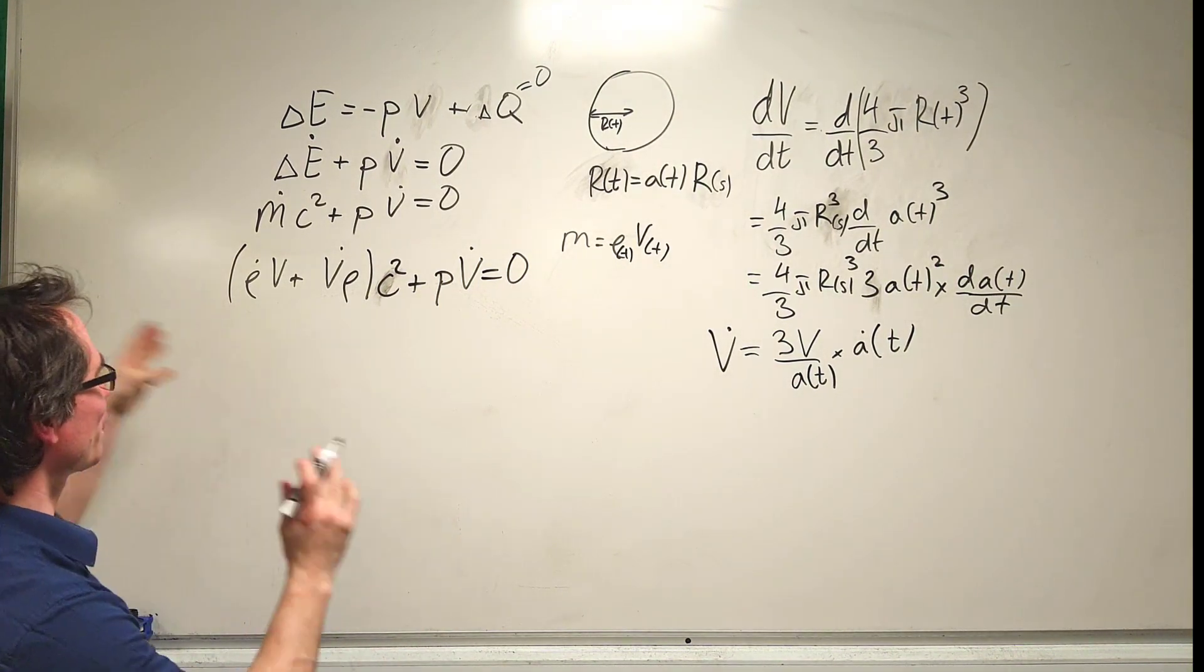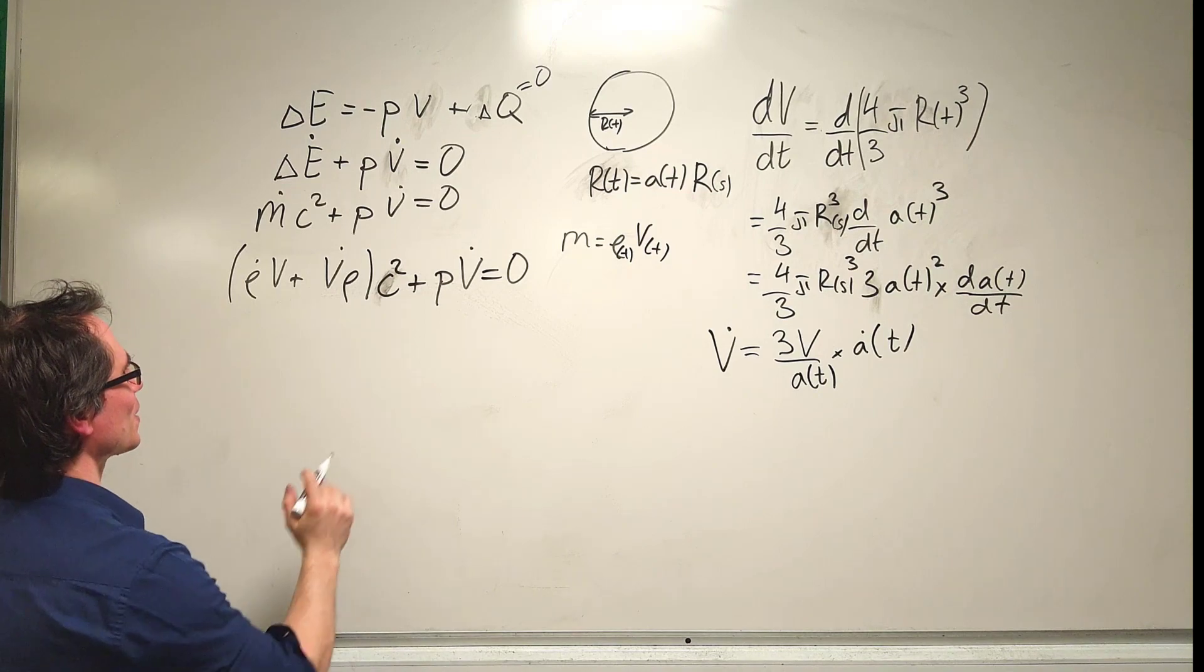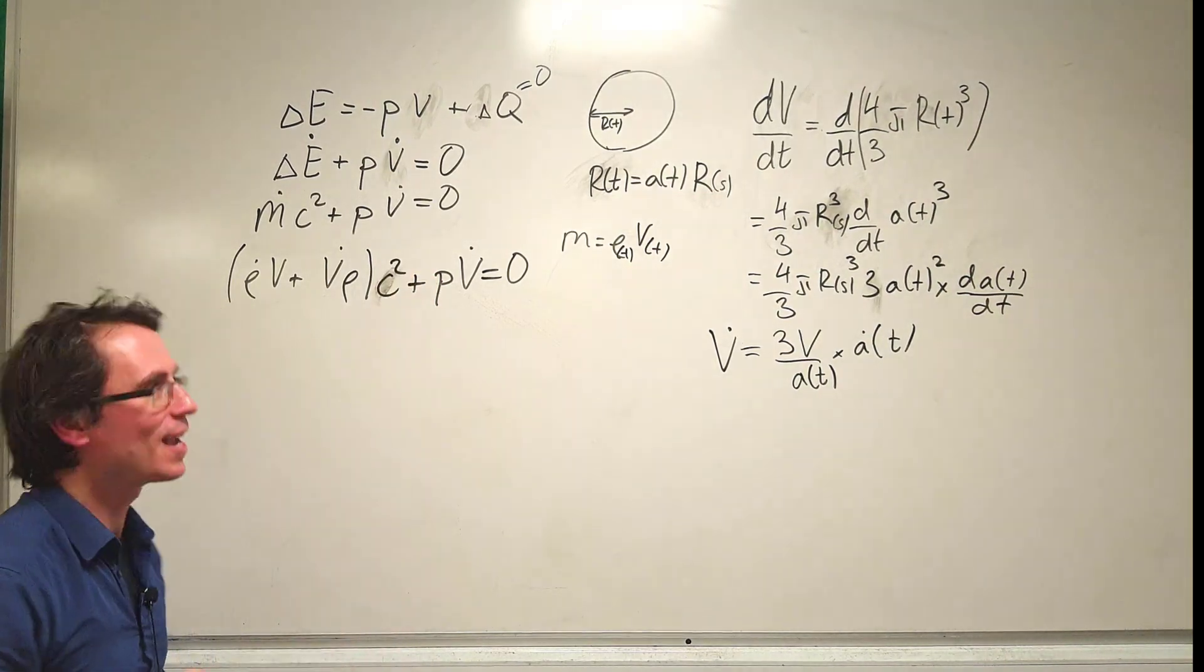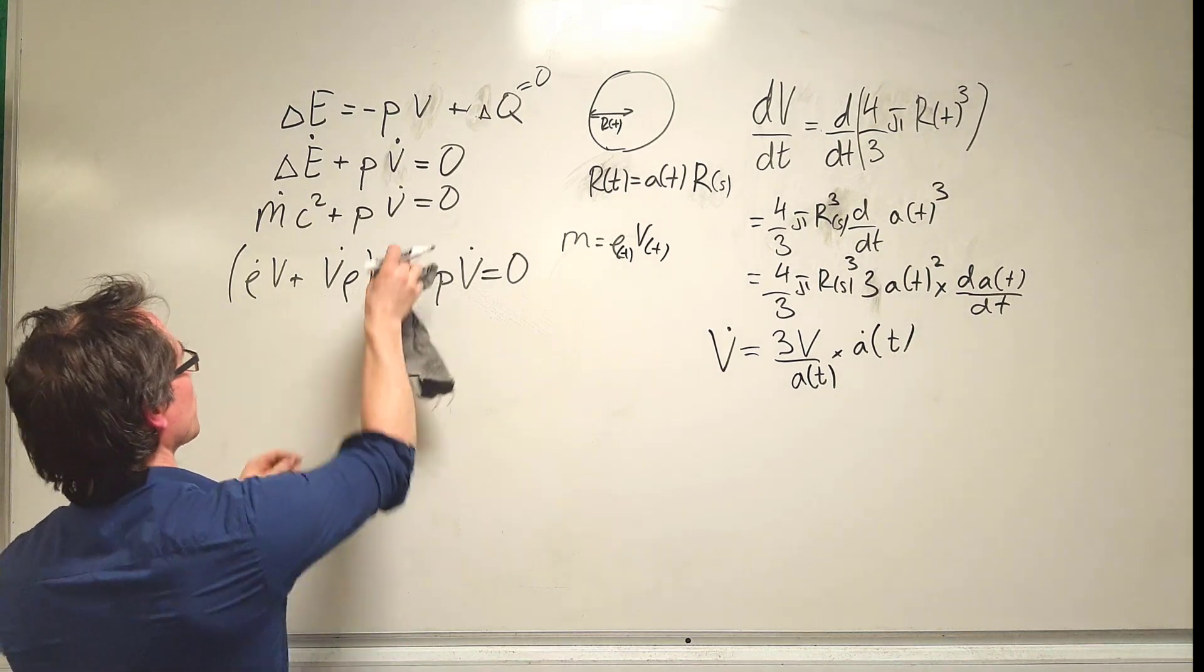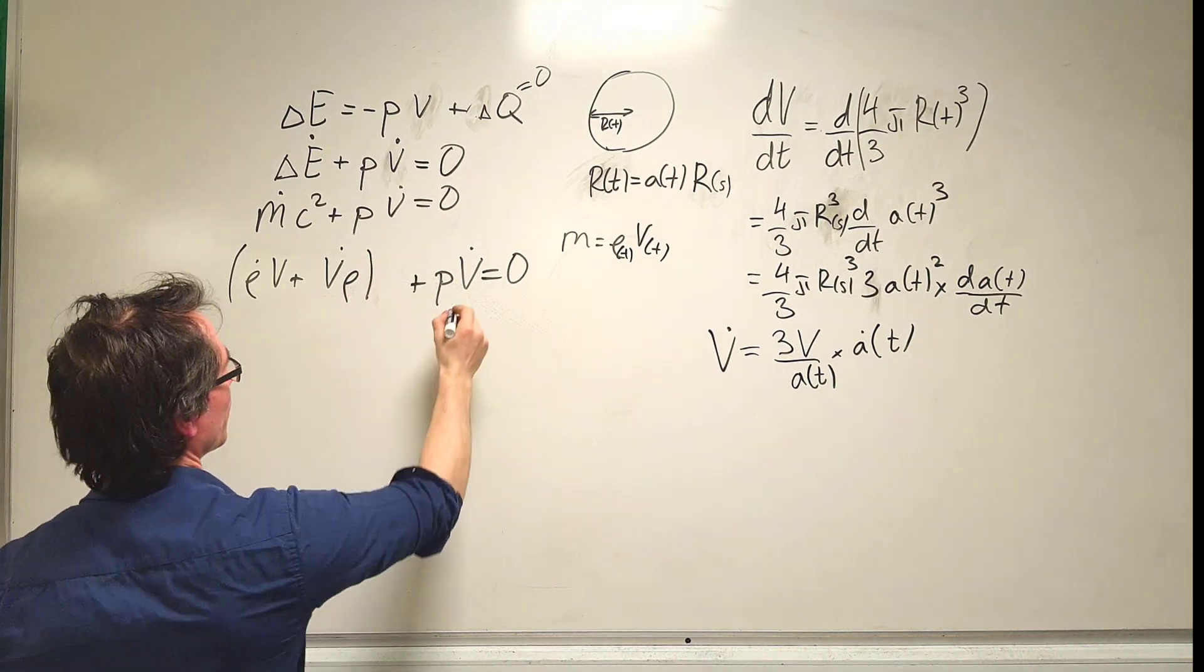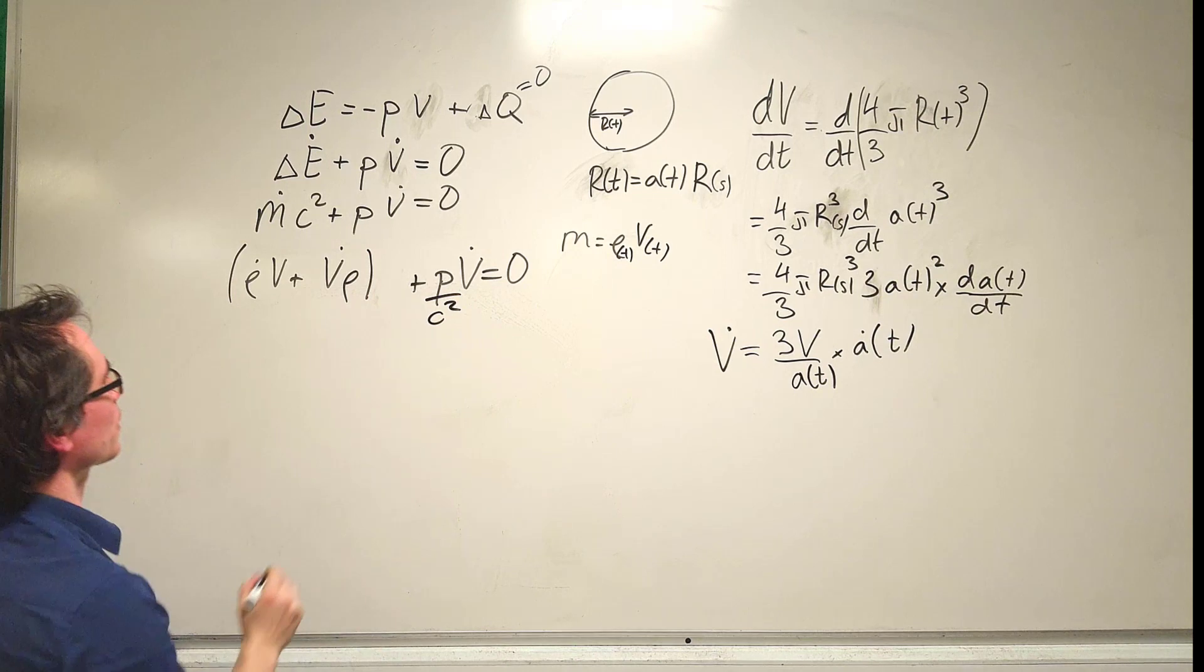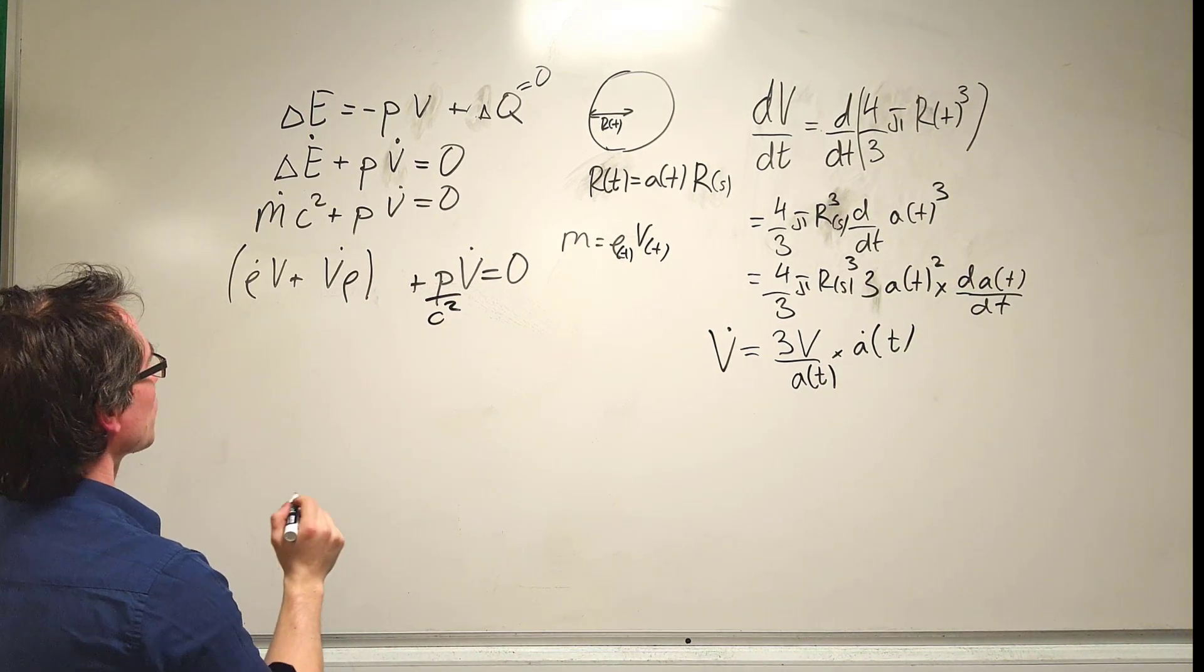Now I'm going to divide both sides of the expression by c squared just to keep things a little bit simpler.